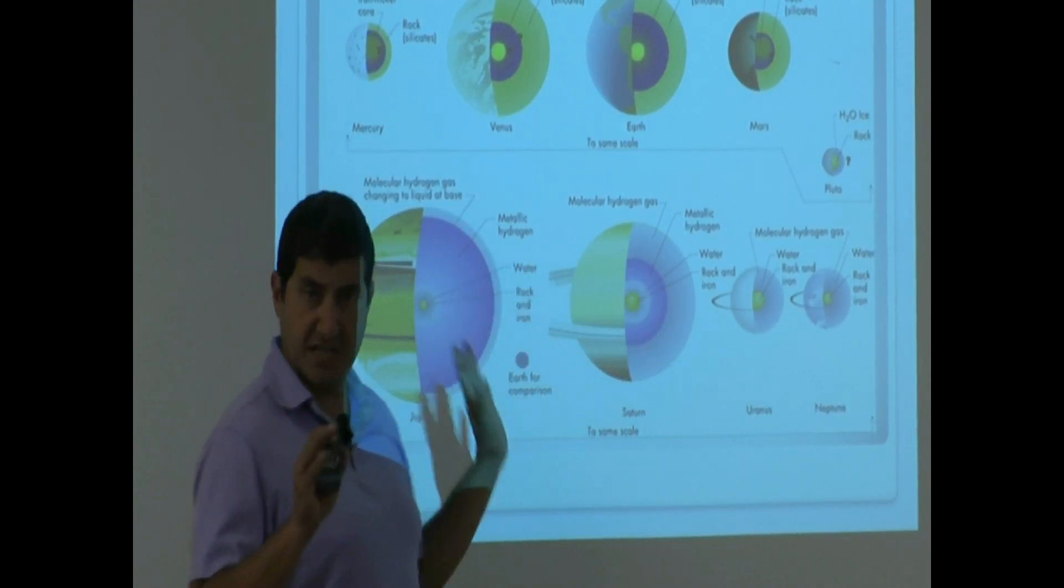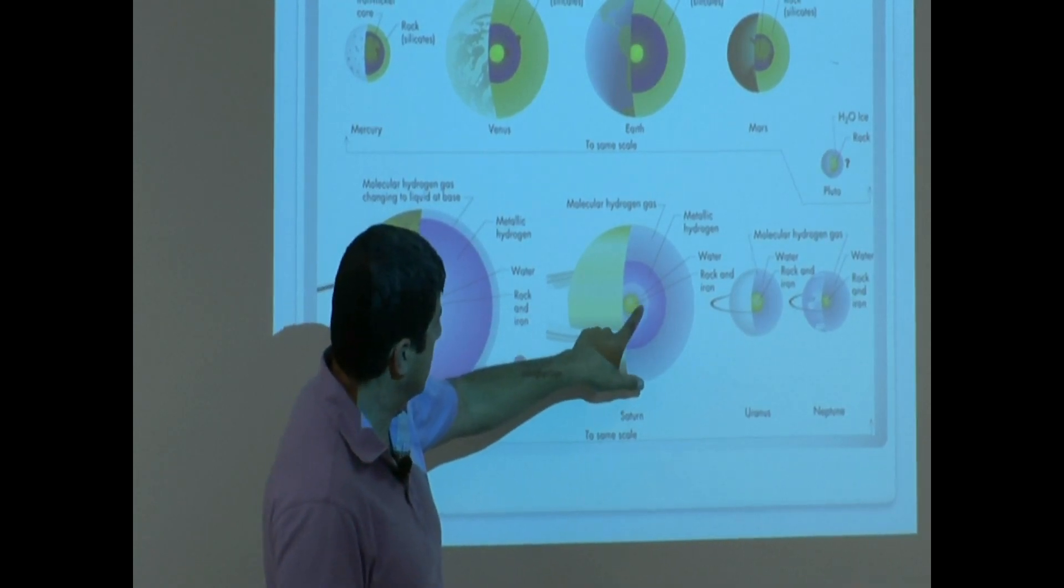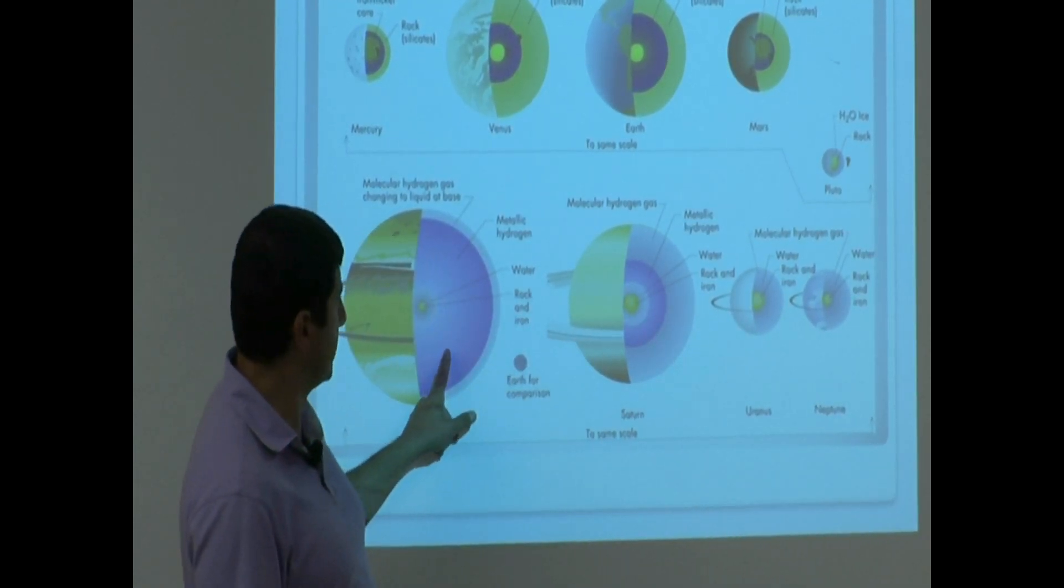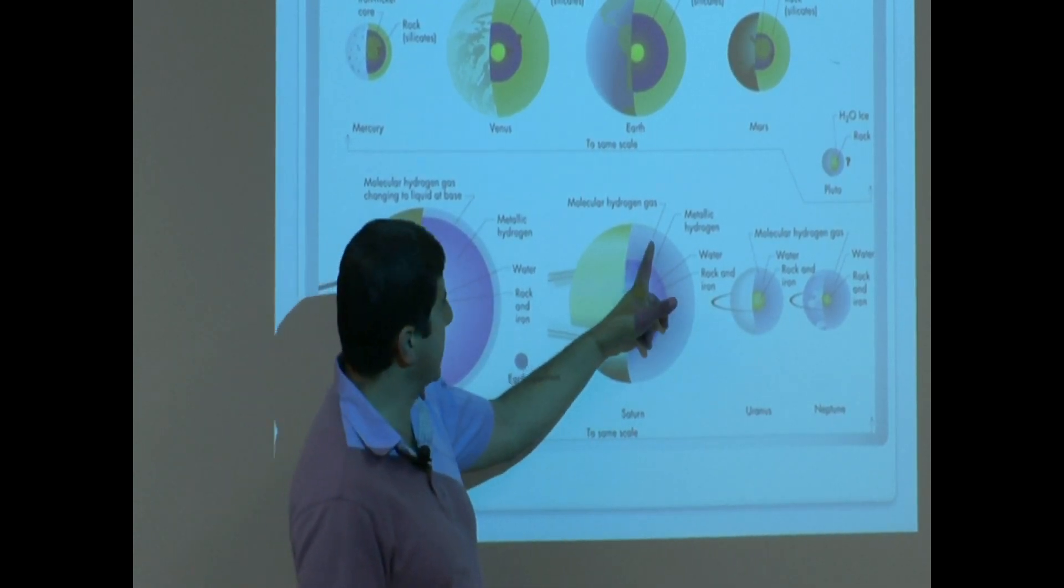Saturn is going to be similar. It's going to have core, water, metallic hydrogen, not as big as Jupiter's, and molecular hydrogen.